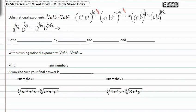From here we can add exponents when the bases match. A to the eight-twelfths and a to the three-twelfths can be added together as a to the eleven-twelfths. B to the four-twelfths times b to the six-twelfths can be added exponent-wise to get b to the ten-twelfths.